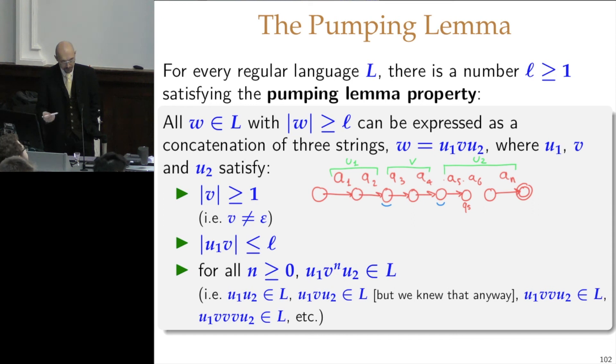That every DFA has a number, which is its number of states, such that all the strings that exceed the number of states are pumpable, because they are at some point doing a loop among the states. If the string is longer than the number of states, at some point you must loop, and the loop can be repeated arbitrarily many more times or removed altogether. And that's the effect of pumping that gives me all these extra strings.